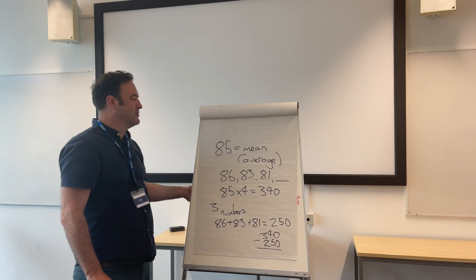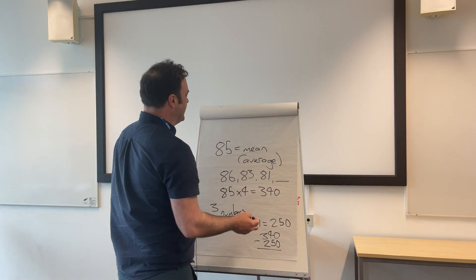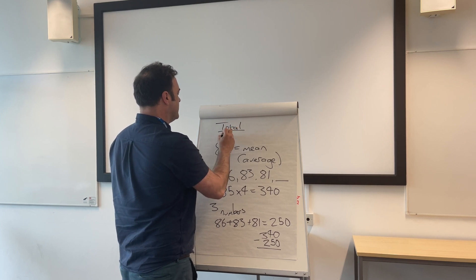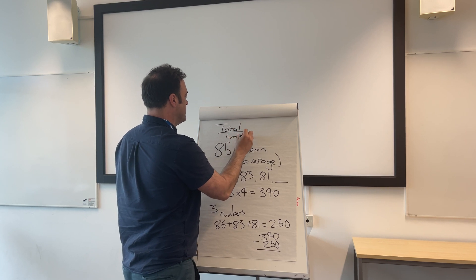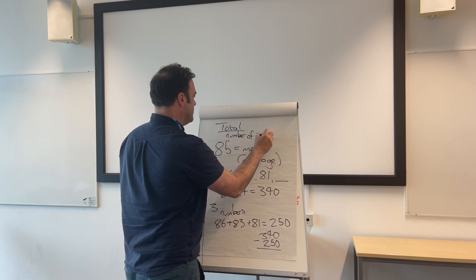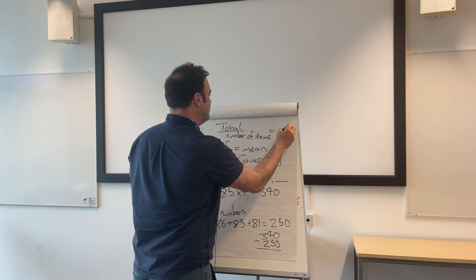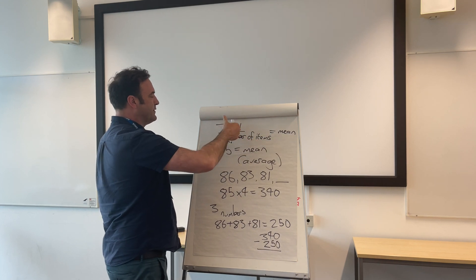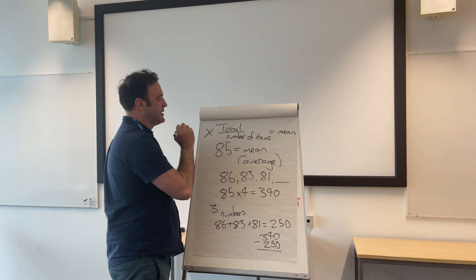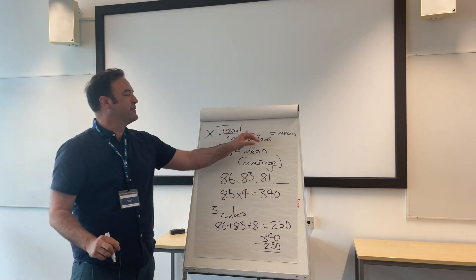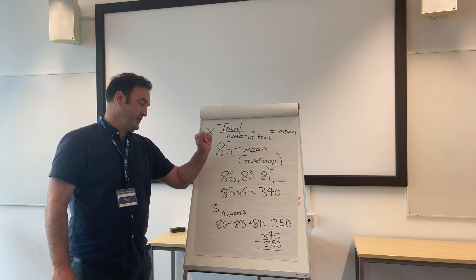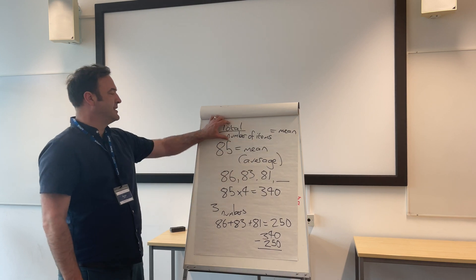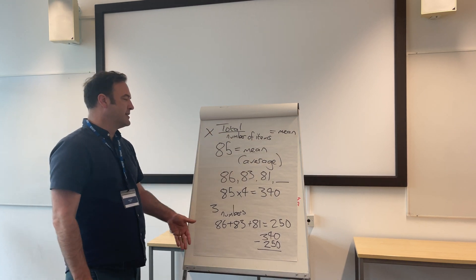The next one's a little bit more difficult. With the mean, we always tell kids it's the total divided by the number of data items. But what if you've been given the mean in the question? Well, you invert — the opposite of divide is multiply. So if you've been given the answer to something you've learnt which is to divide, if you've been given the opposite — the answer — then you must invert: instead of divide, you multiply.